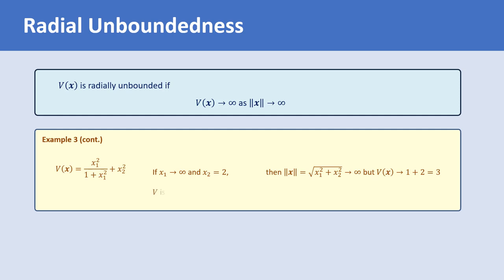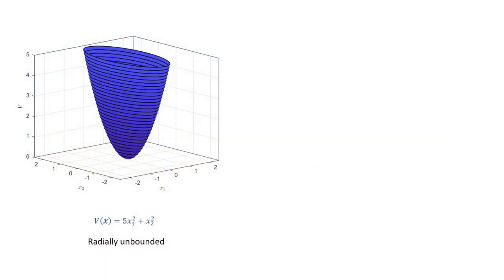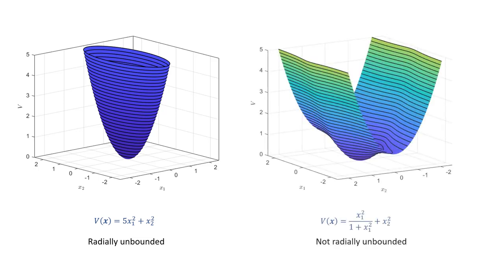According to the definition, V is not radially unbounded, as it doesn't go to infinity as the norm of x goes to infinity. But the function V(x) = 5x1² + x2² is radially unbounded, since V(x) goes to infinity as the norm of x goes to infinity. For radially unbounded functions, all level curves are closed and the function is shaped like a cup. But if a positive definite function is not radially unbounded, then only the small level curves are closed. Note that for all positive definite functions, the level curves V(x) = c are always closed for small positive values of c, but if a function is also radially unbounded, then the level curves are closed for all values of c.